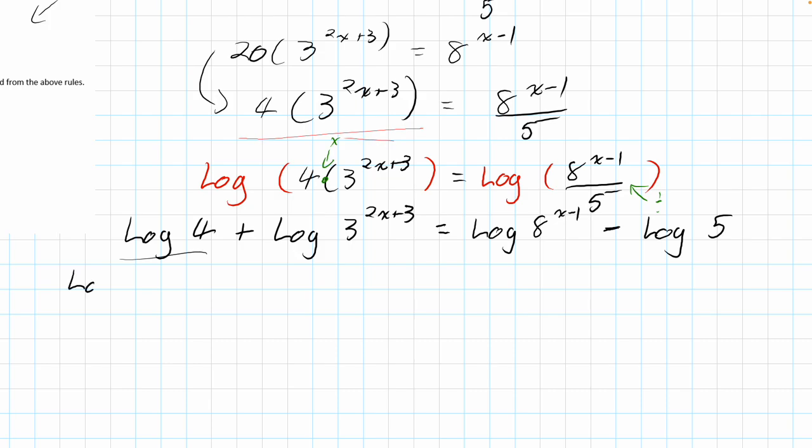So my other logs are going to stay the same. Log base 10 of argument 4, just leaving it. This piece will now become a coefficient. So we're going to say plus. Now put it in a little set of brackets here, because it's a funny coefficient. It's got multiple terms to it. 2x plus 3, log 3. And then we're going to do the same thing here. This exponent will be the coefficient. So x minus 1, that was the power of log 8 minus log 5.